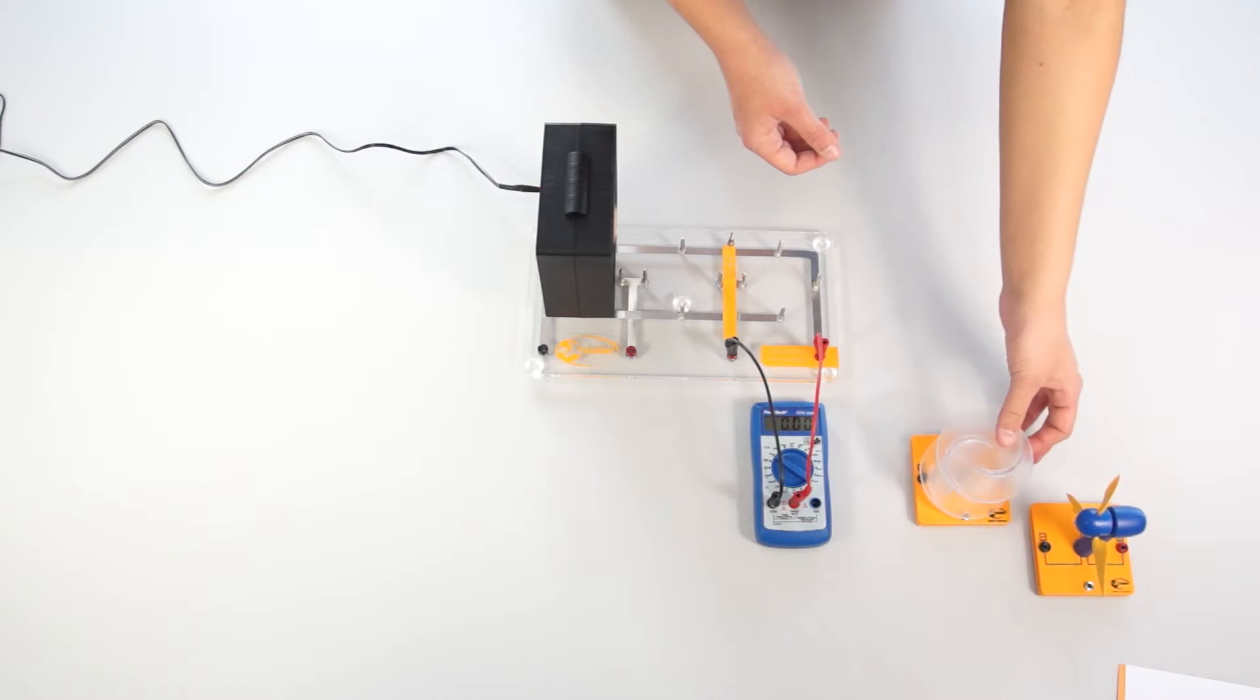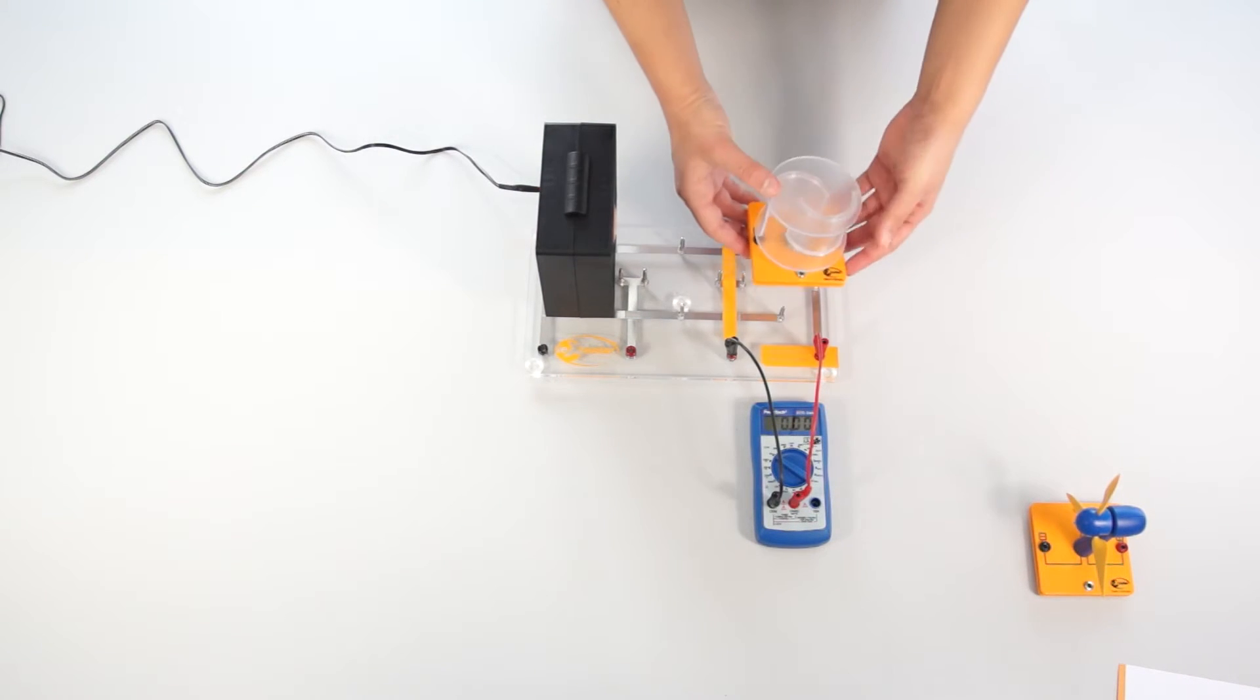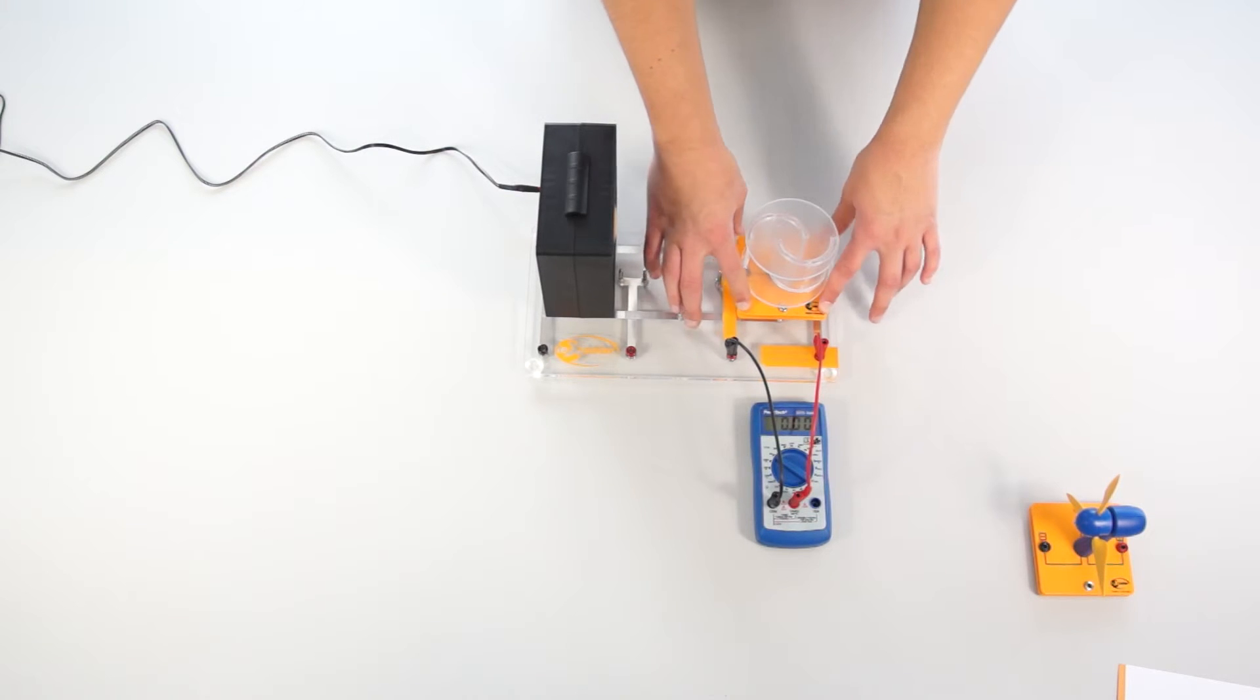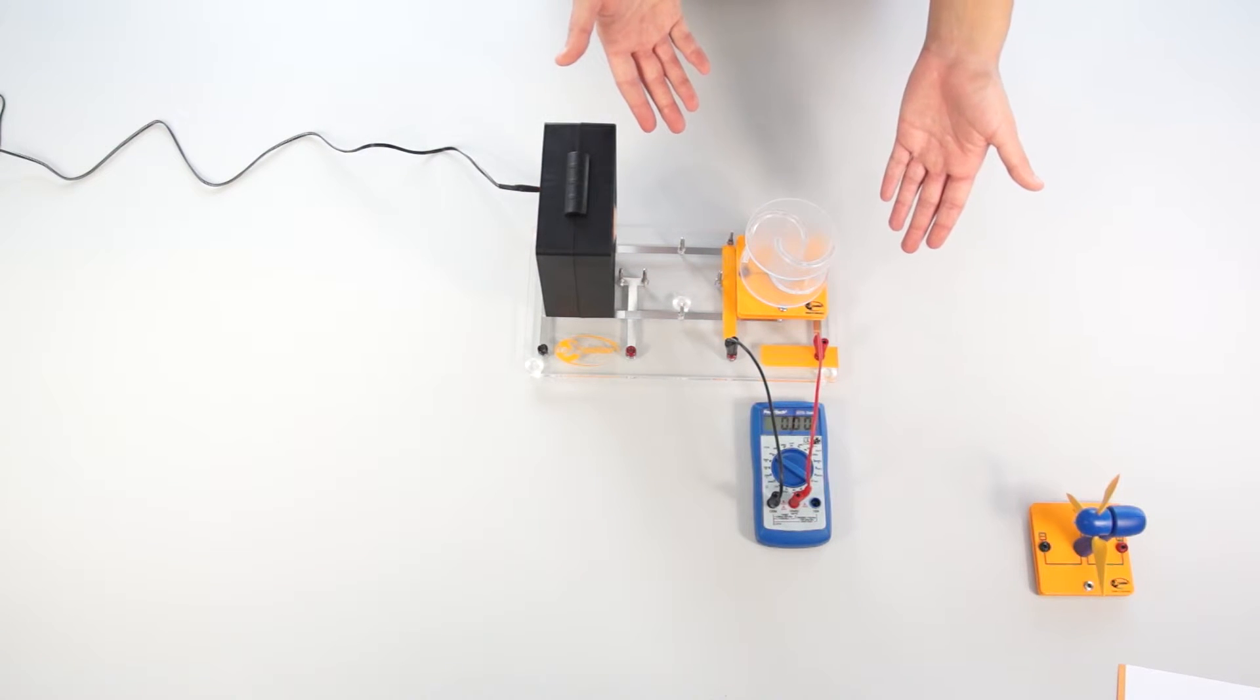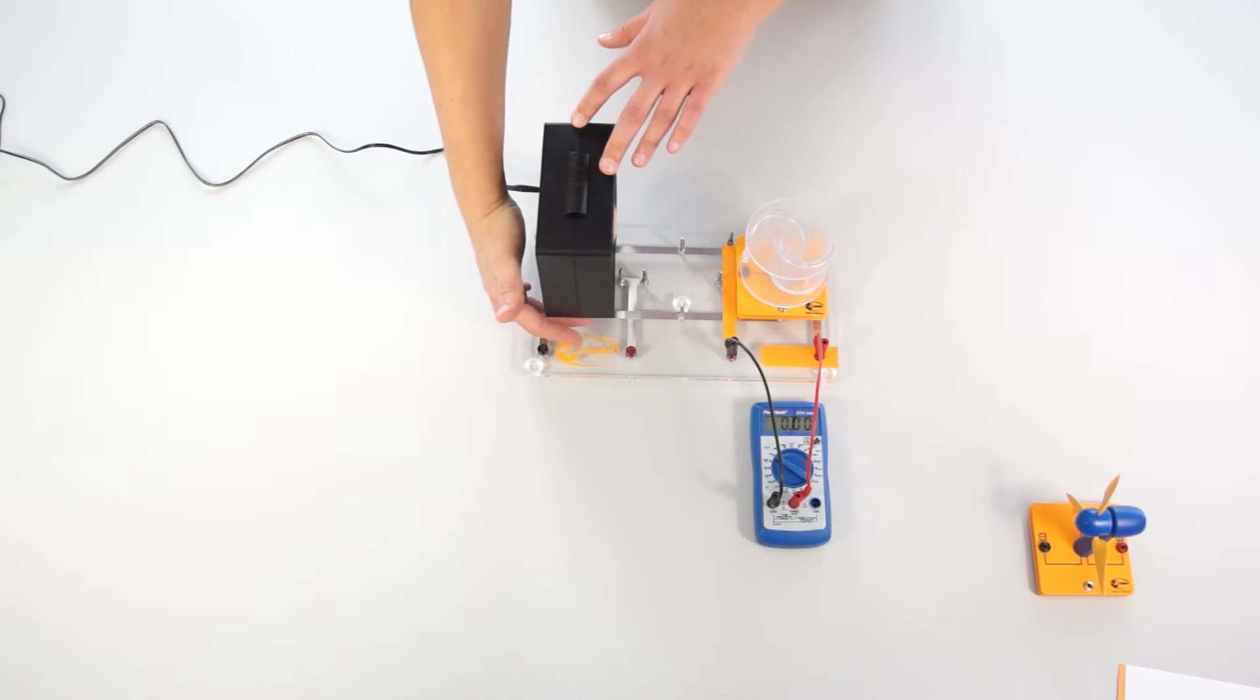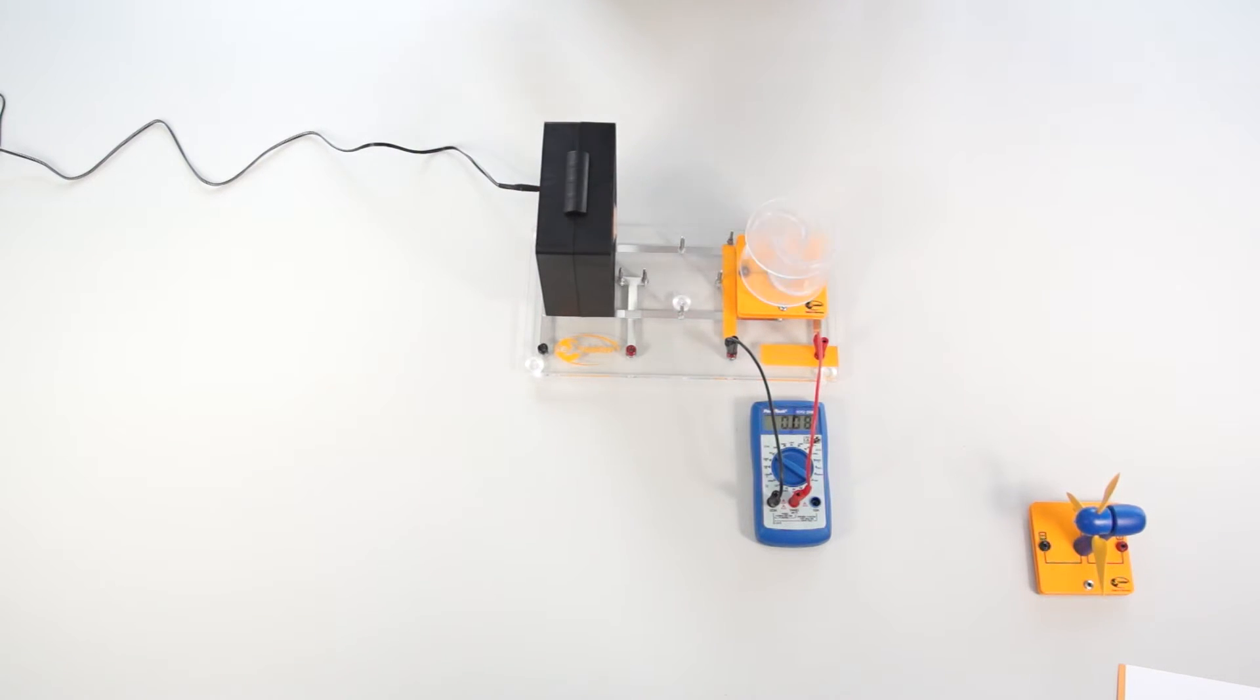We replace them now against the Savonius rotor which is also attached to the base unit. We now turn on the wind machine again and see what happens. With the naked eye it's identified that the rotational speed of the Savonius rotor is much slower due to the greater inertia than the classic wind turbine.